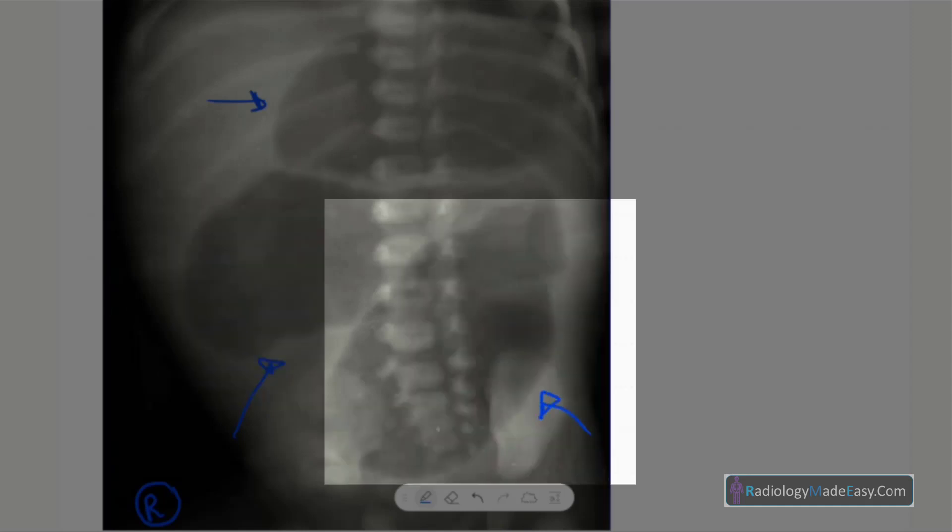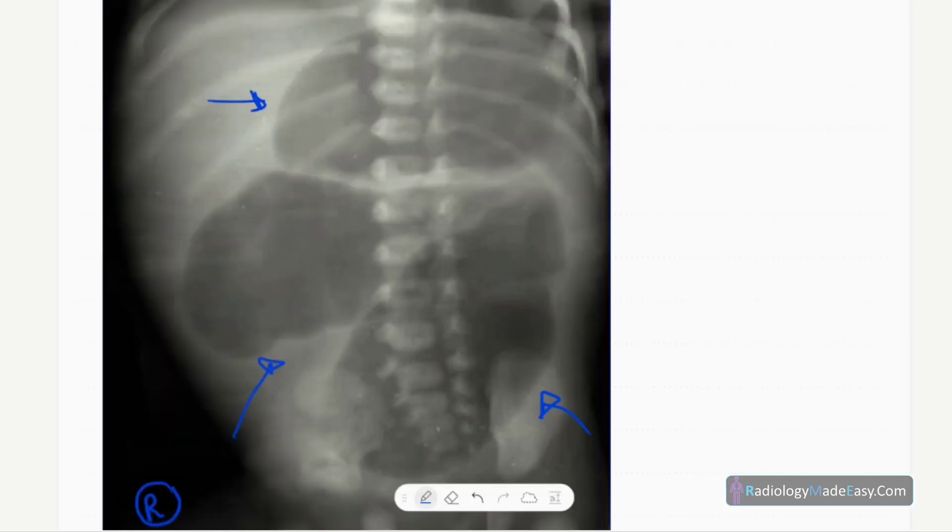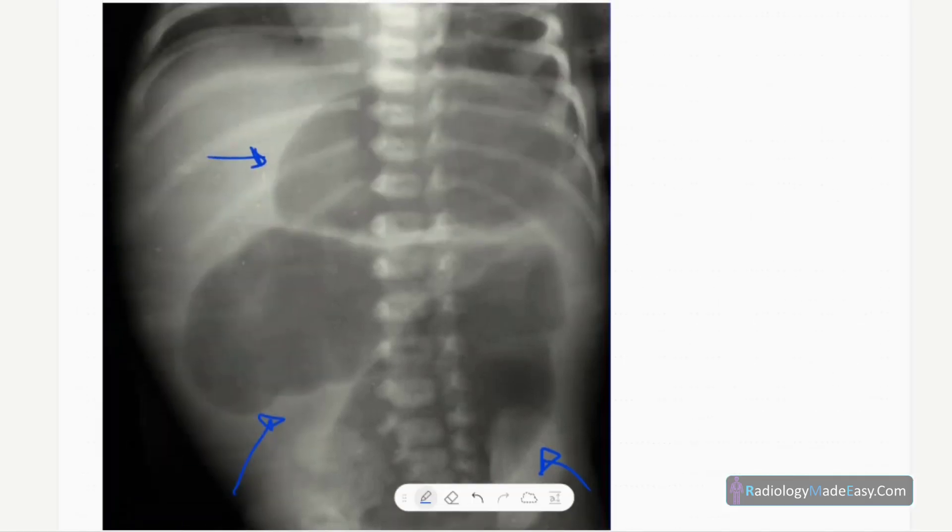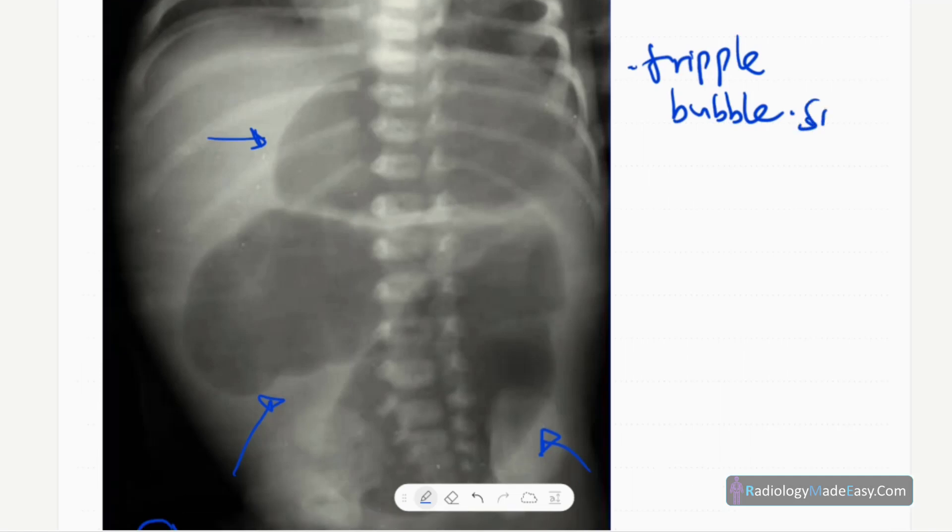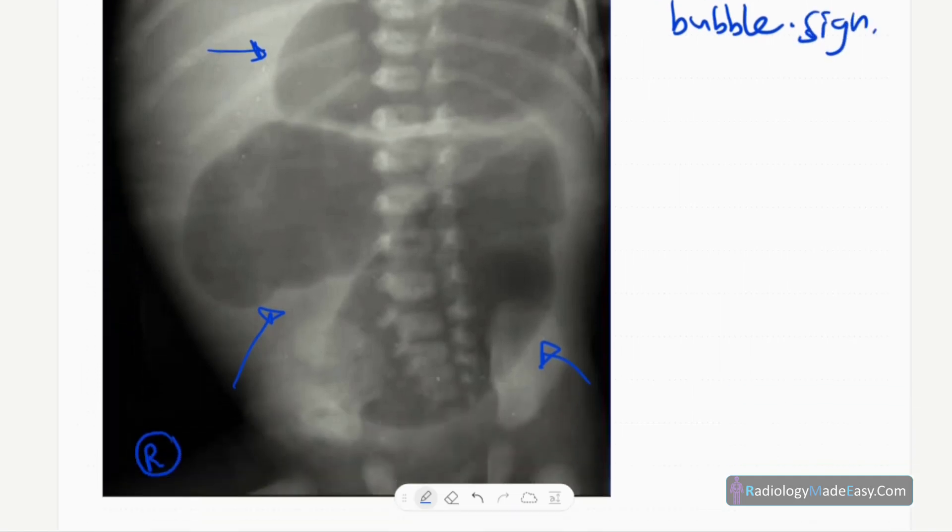So three large lucencies in the abdomen. You call it triple bubble appearance or triple bubble sign